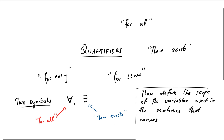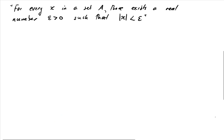They normally go at the start of a mathematical statement, and they say something about what the deal is with the variables inside the sentence that follows. Statements like this are common in analysis. For example: 'for every x in a set A, there exists a real number epsilon greater than zero such that the absolute value of x is less than epsilon.' We can write this in symbols: for all x in A, there exists epsilon greater than zero such that the absolute value of x is less than epsilon.